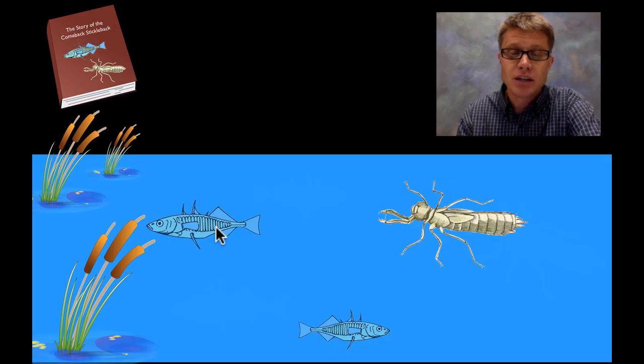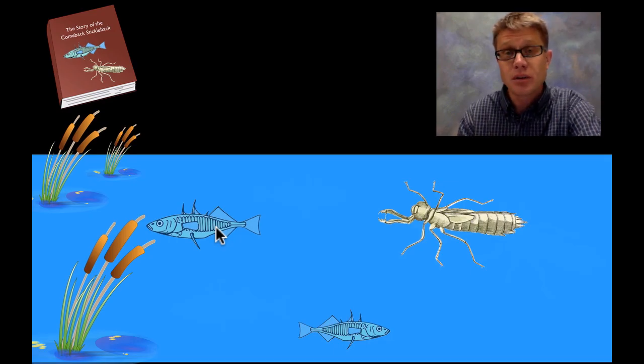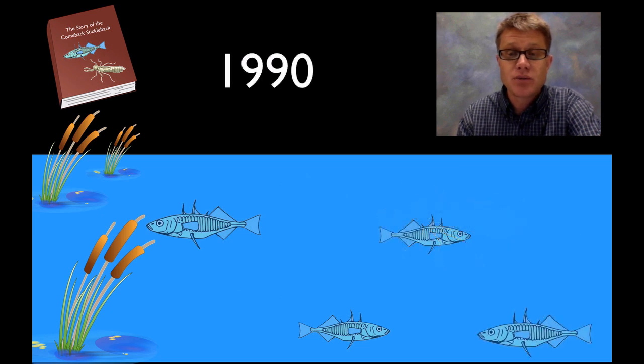And so basically what happens is we have growth of the stickleback. They start to do well. But we also have these dragonflies that are doing well just eating them. And so this is when the scientists show up. And I'll show you data in just a second.